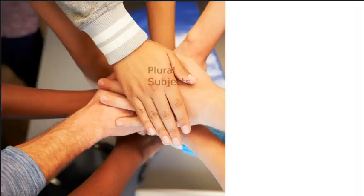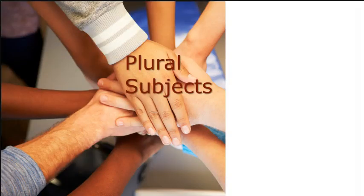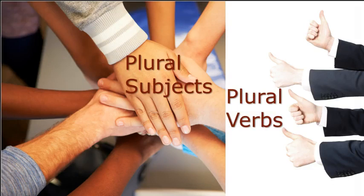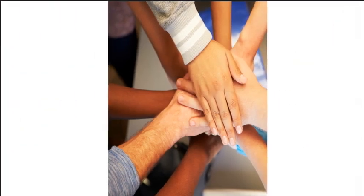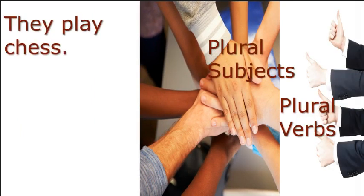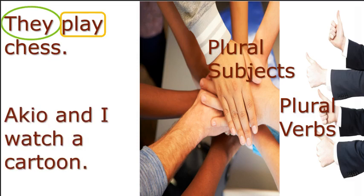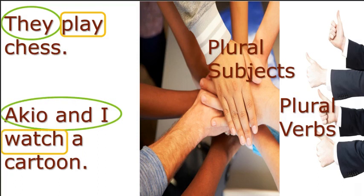Let's talk about plural nouns and plural verbs. When we have plural subjects, we use plural verbs. Let's look at some examples. 'They play chess' — 'they' is a plural subject and uses a plural verb. 'A-cue and I watch a cartoon' — 'a-cue and I' together make a plural subject and they take a plural verb.